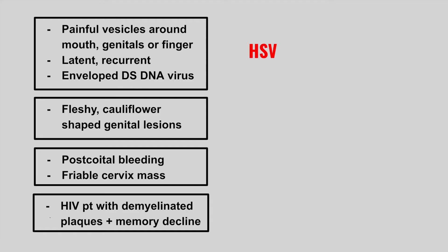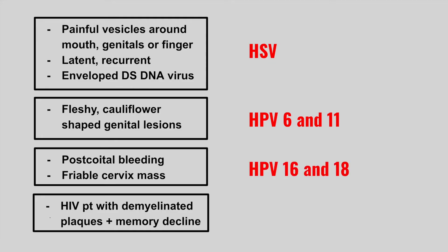The next patient is going to have a fleshy cauliflower-shaped genital lesion. This is HPV 6 and 11 causing HPV warts. The next patient is going to have post-coital bleeding and a friable cervical mass. This is going to be HPV 16 and 18 causing cervical carcinoma.